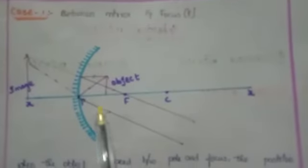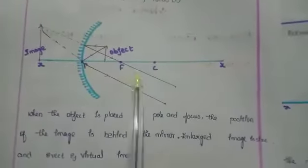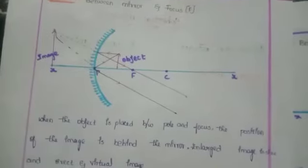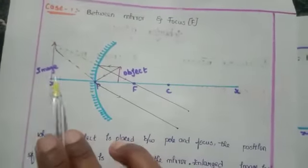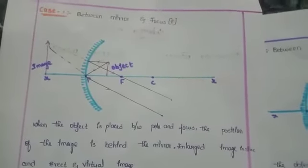See here, it is the first case: when the object is placed between the mirror and the focus. Here is the ray diagram of concave mirror case 1. The object is placed between the pole and the focus. The ray will go parallel to the principal axis and pass through the focus, and another ray passes through the pole and comes back obliquely. We have to imagine that the image will form behind the mirror, so it is a virtual image. When the object is placed between pole and focus, the position of image is behind the mirror. The image size is larger — the object is small and the image is big. It is an erect and virtual image.